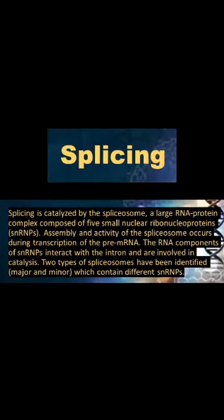Splicing is catalyzed by the spliceosomes, a large RNA-protein complex composed of 5 small nuclear ribonucleoproteins. Assembly and activity of the spliceosome occurs during transcription of the pre-mRNA. The RNA components of SNRNPs interact with the intron and are involved in the catalysis. Two types of spliceosomes have been identified, major and minor, which contain different SNRNPs. RNA splicing is a form of RNA processing in which a newly made precursor messenger RNA transcript is transformed into a mature messenger. During splicing, introns of the non-coding regions are removed and exons, or the coding regions, are joined together.